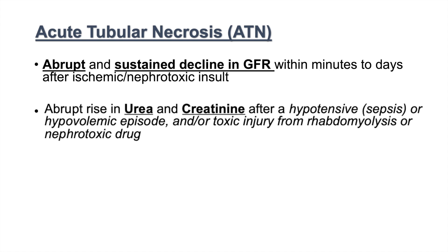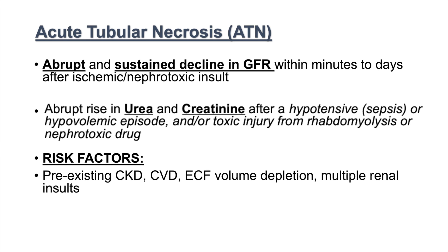ATN leads to an abrupt rise in urea and creatinine after an ischemic or nephrotoxic insult. These can be further subdivided into hypotensive episodes, sepsis, rhabdomyolysis, or administration of a nephrotoxic drug. ATN also has specific risk factors, including pre-existing chronic kidney disease, cardiovascular disease, extracellular fluid volume depletion, and multiple renal insults, all of which can predispose an individual to ATN.